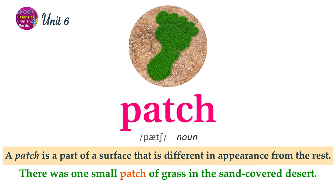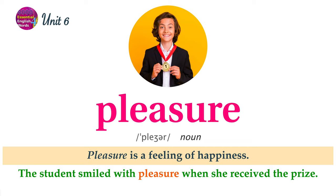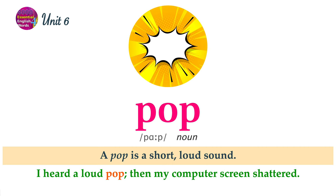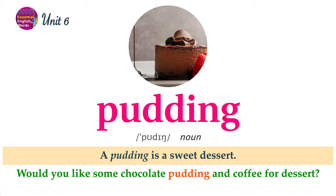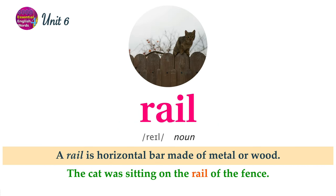A patch is a part of a surface that is different in appearance from the rest. There was one small patch of grass in the sand-covered desert. Pleasure is a feeling of happiness. The student smiled with pleasure when she received the prize. A pop is a short, loud sound. I heard a loud pop. Then my computer screen shattered. A pudding is a sweet dessert. Would you like some chocolate pudding and coffee for dessert? A rail is a horizontal bar made of metal or wood. The cat was sitting on the rail of the fence.